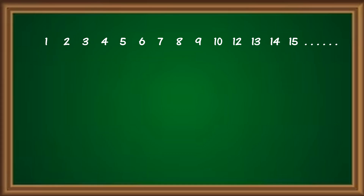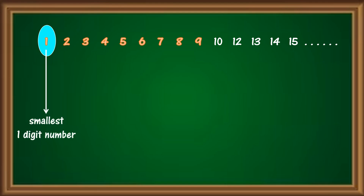Looking at the 1-digit numbers from 1 to 9, we can clearly see that 1 is the smallest number with 1 digit, or the smallest 1-digit number.